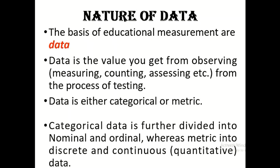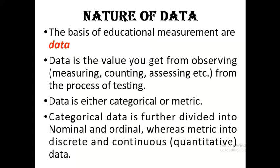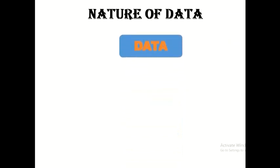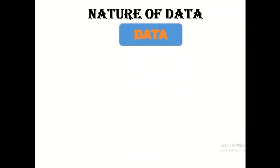Your categorical data can further be divided into nominal and ordinal data, whereas metric data can be divided into discrete and continuous. Metric data are also regarded as quantitative data. Let's take a diagrammatic look at the classification of data as we have just discussed.